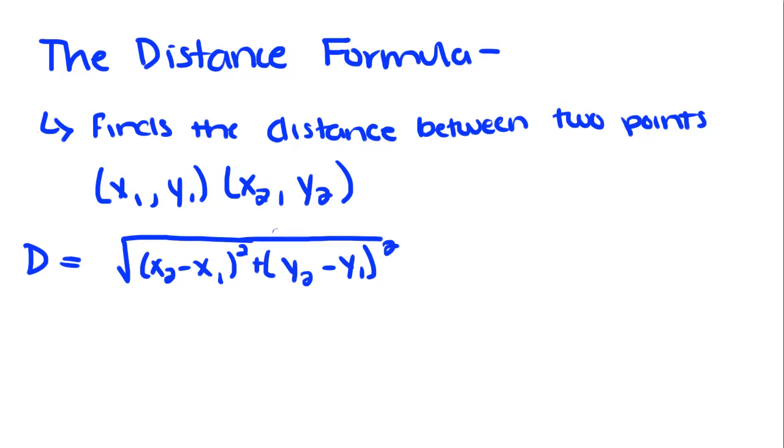Today we're going to talk about the distance formula. The distance formula finds the distance between two points. We have point (x1, y1) and (x2, y2), and we substitute these two points into the formula. Distance equals the square root of (x2 minus x1) squared plus (y2 minus y1) squared.